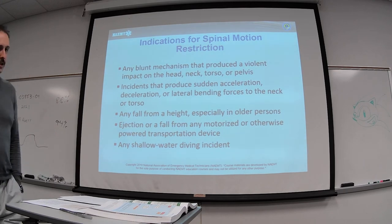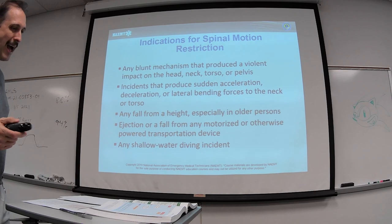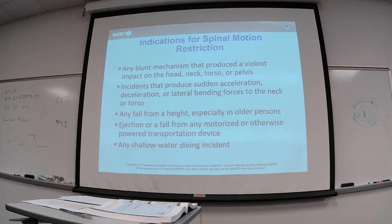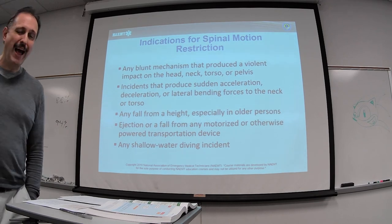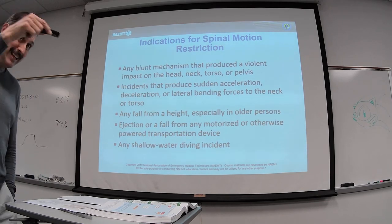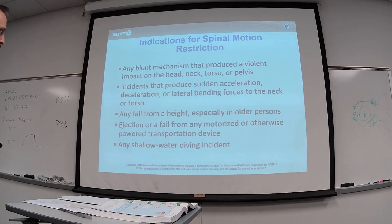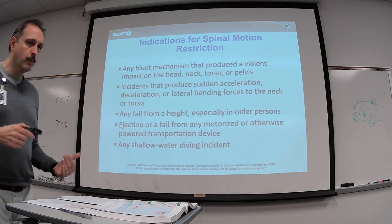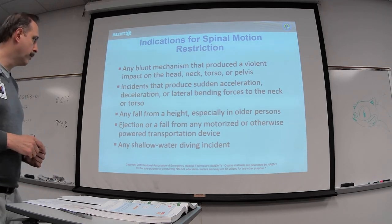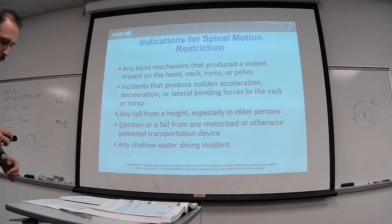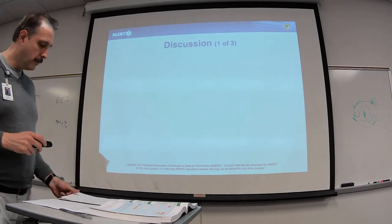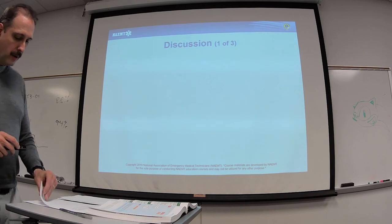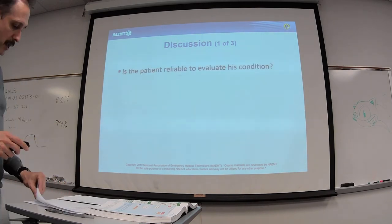For this patient, the blunt mechanism involved massive deceleration when he hit the bottom of the pool — similar to massive acceleration-deceleration in auto accidents with coup-contrecoup injuries. We also need to consider where he dove — the shallow end versus the deep end of the pool — as that affects the height and force of the impact.